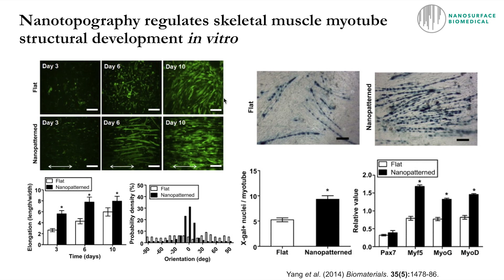In addition to cardiomyocytes, we've investigated the potential for nanosurface substrates to enhance the structural and functional development of other cell types, including skeletal muscle cells. In addition to improvements in alignment of skeletal muscle myofibers, nanosurfaces provide cues that upregulate the expression of myogenic regulatory factors critical to enhancing the differentiation of skeletal muscle in vitro. We also see an improvement in the number of nuclei recruited to each individual myotube, indicating hypertrophy within these tissues.